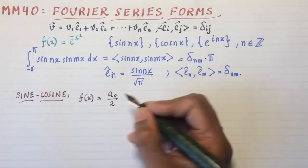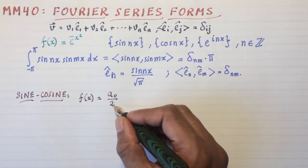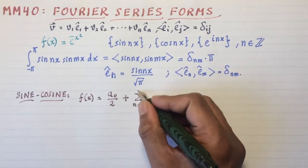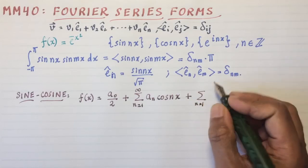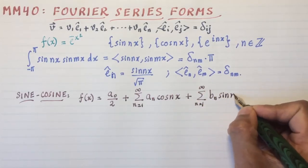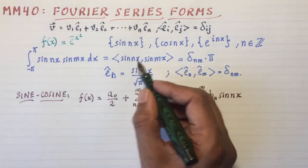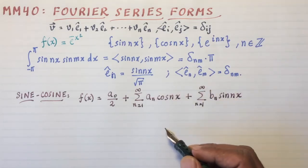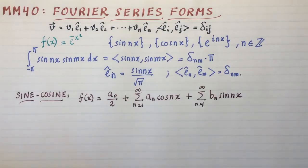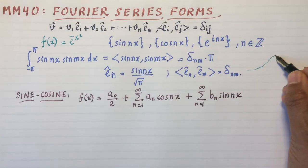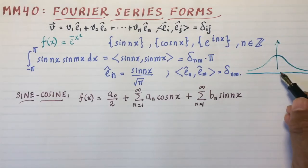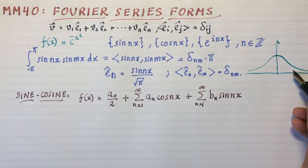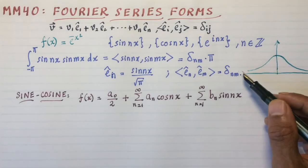You can write f(x) as some constant term, which for normalization reasons, we're going to write as a_0/2, plus the sum from n=1 to ∞ of a_n cos(nx), and the sum from n=1 to ∞ of b_n sin(nx). So the price you pay for writing it in this basis of sine or cosine is that you need an infinite number of terms, and that seems to make sense. If you're going to, after all, break up something that looks like a bell curve, you're talking about an almost impossible situation here.